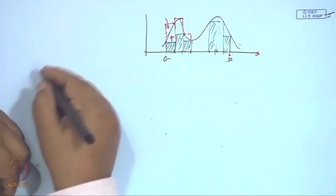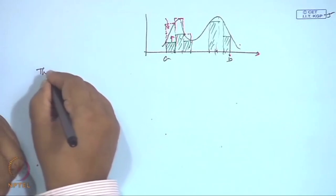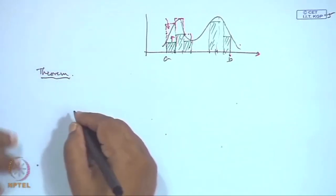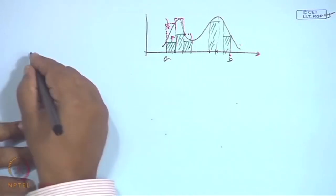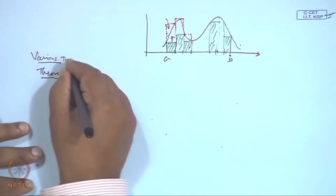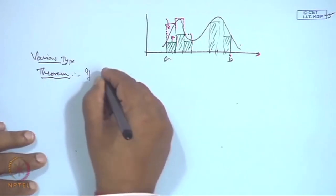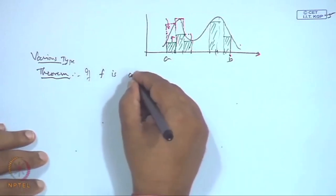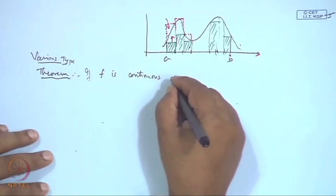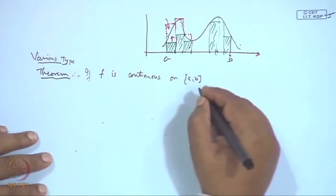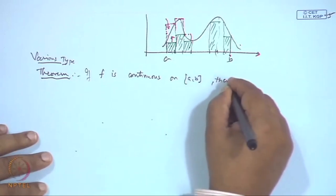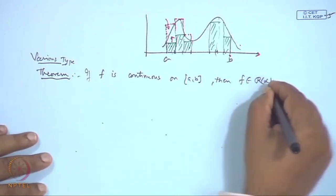Now let us examine specific functions that are always Riemann-Stieltjes integrable. The first theorem states: if f is continuous on the closed interval [a,b], then f is Riemann-Stieltjes integrable with respect to α on [a,b].